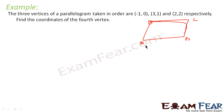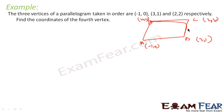The given vertices are (-1, 0), (3, 1), and (2, 2). Let's suppose the fourth vertex D is (x, y). We have to find the value of x and y. We know that in a parallelogram, the midpoints of the diagonals AC and BD coincide. So we will find the midpoint of AC.